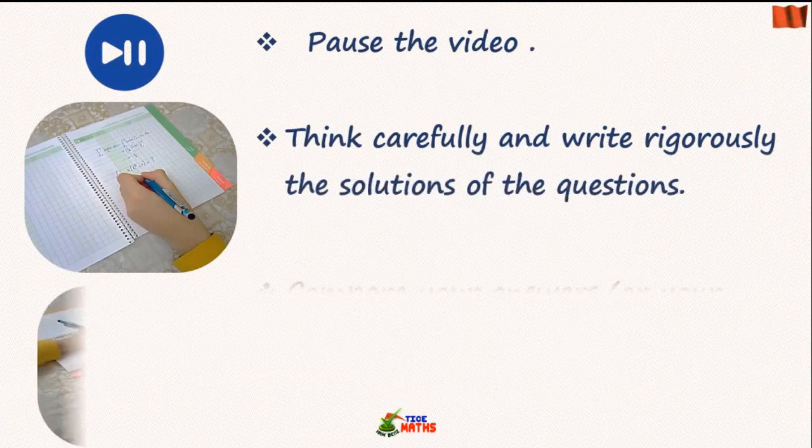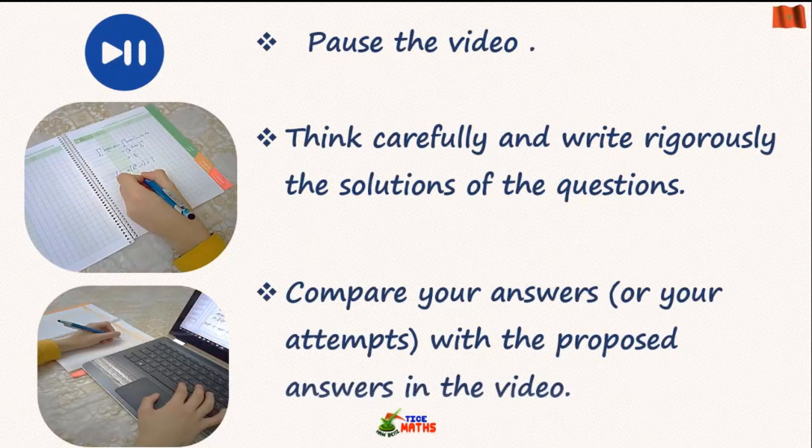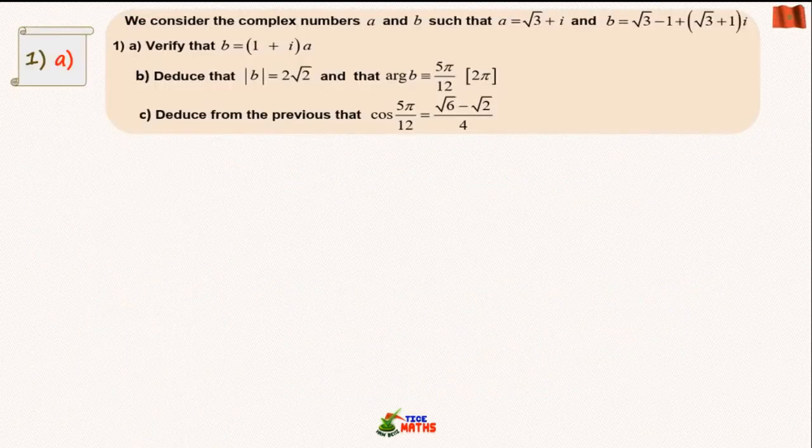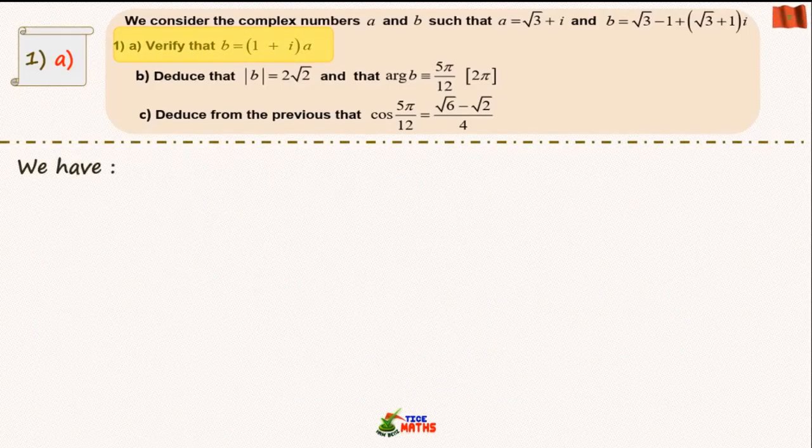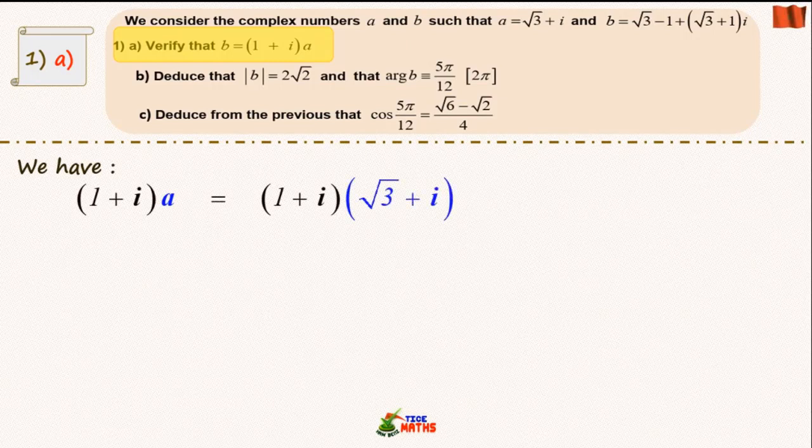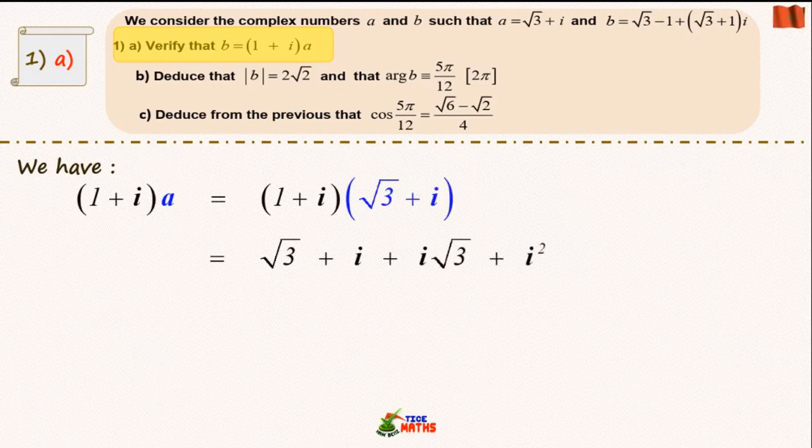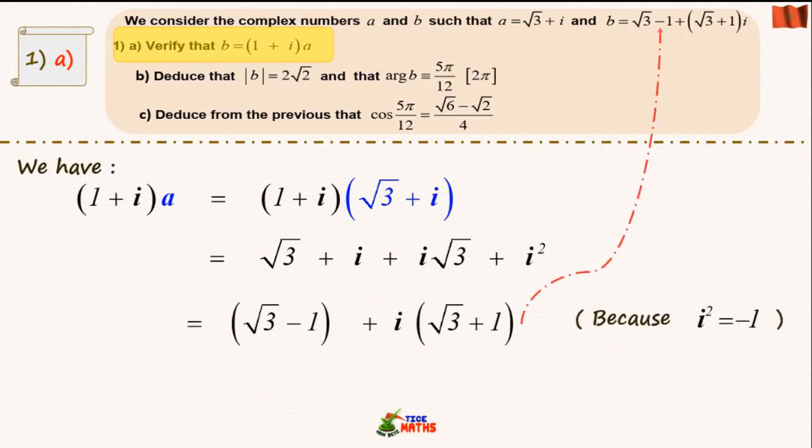For the first question 1a, just develop and simplify the product (1 + i) times a, while using i² equals minus 1. Then you get the given complex number.